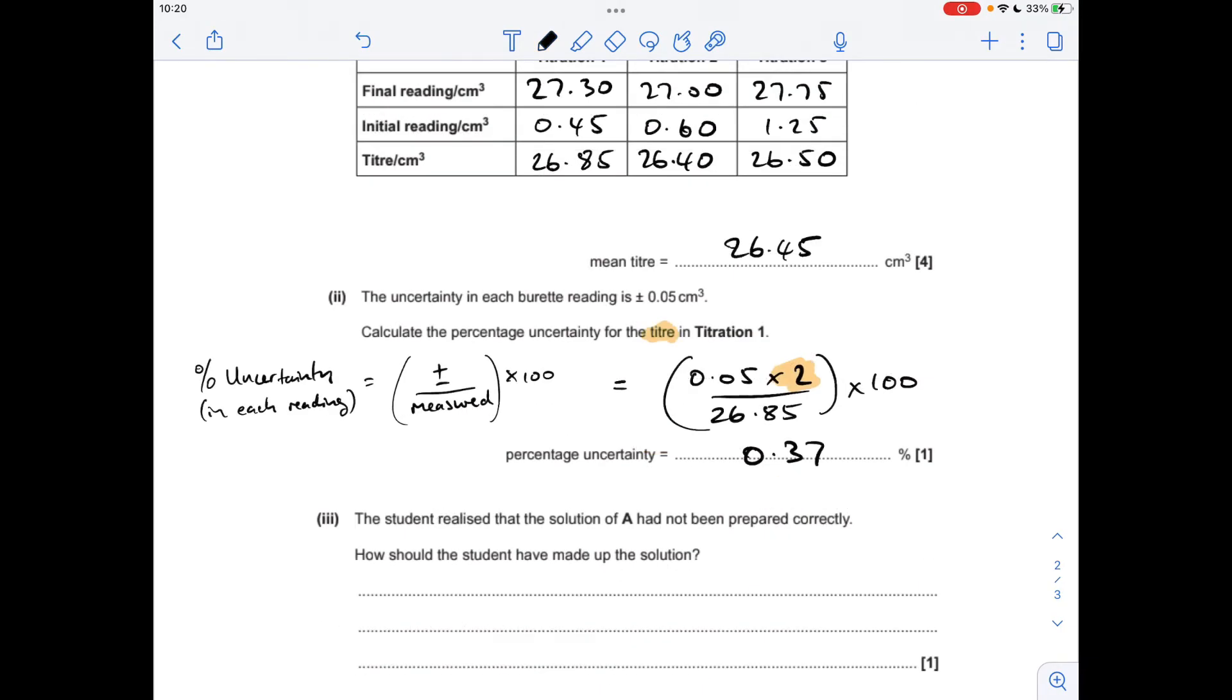So the solution A had not been prepared correctly. What was the issue with the method used? Well, this solution was made up in a beaker, which is not the right apparatus. They should have used a 250 cm cubed volumetric flask.